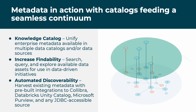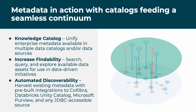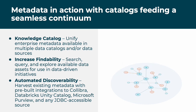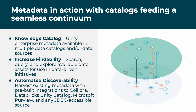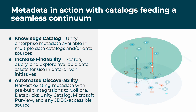To enable our customers with their own metadata to facilitate mappings and understand data use, we offer a Knowledge Catalog. The catalog quickly and easily harvests existing metadata from a variety of sources, which include Calibra, Databricks Unity Catalog, Microsoft Purview, and any JDBC-enabled source. The catalog can be searched, queried, and explored to power advanced analytics and other data-driven initiatives.